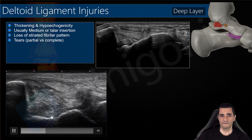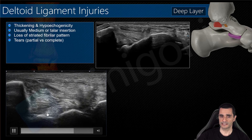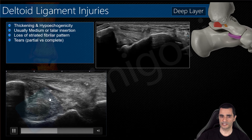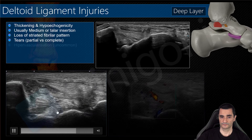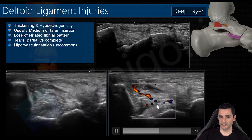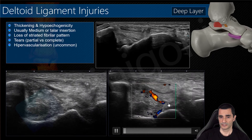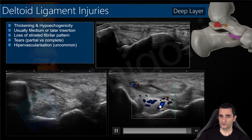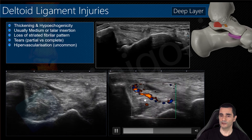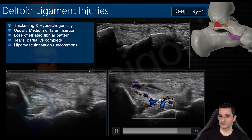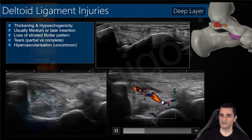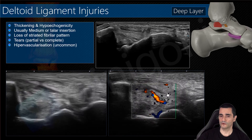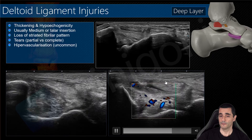We will always find these tears inside the ligament. This is an example of a partial tear of the deep area of the posterior tibiotelar ligament and its vascularization on Doppler. If you want to check the vascularization, always remember to avoid stretching the ligament before performing Doppler, because if the ligament is stretched, the Doppler signal will not be present. Also, don't push with the probe because you will collapse the vessels.